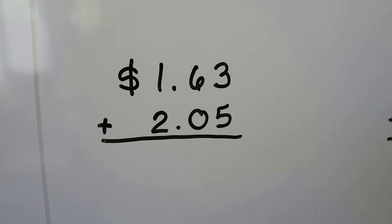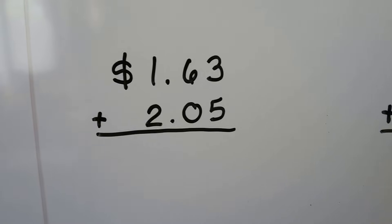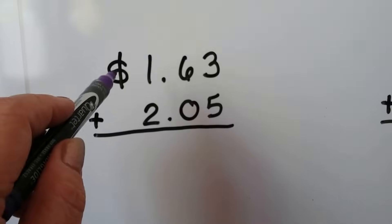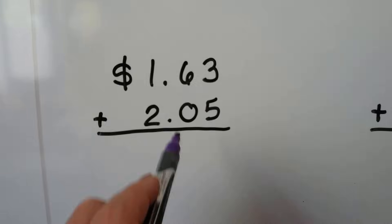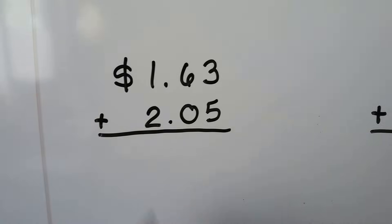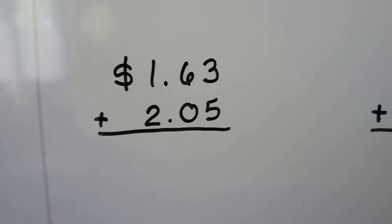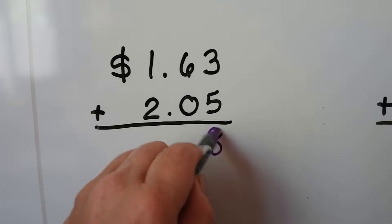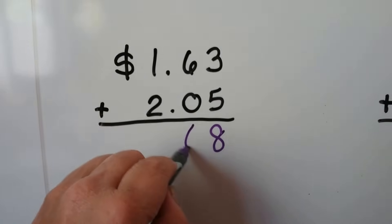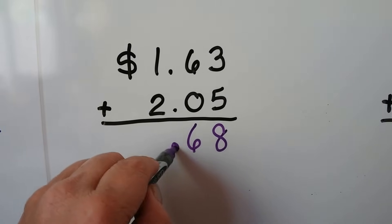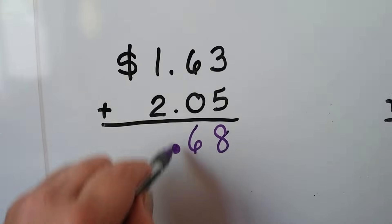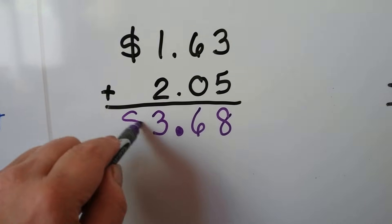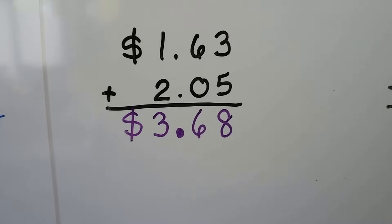Let's try this one. We have $1.63 plus $2.05. Now do you notice there's no dollar sign here on the second number? That's because this one is representing both of them. We have the decimal point there so we know we're adding 2 amounts of money. Let's add the ones place: 5 plus 3 is 8. 6 plus 0 is 6. We put our decimal point nice in a row, and then we add the 1 plus 2 which is 3 — and remember our dollar sign. 3 dollars and 68 cents.